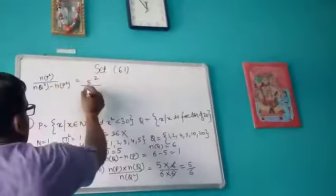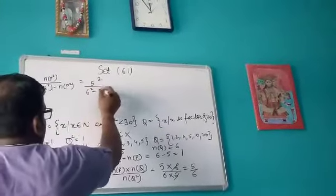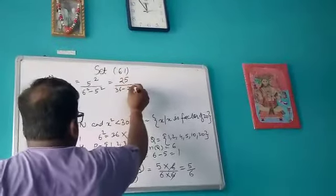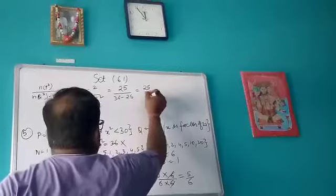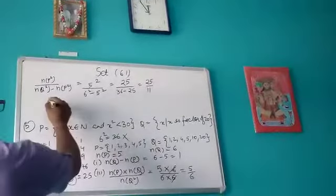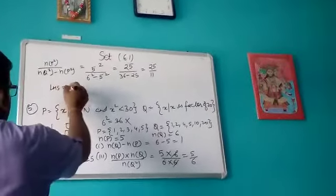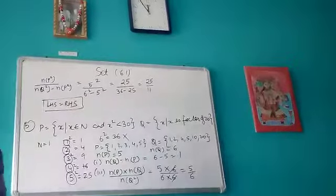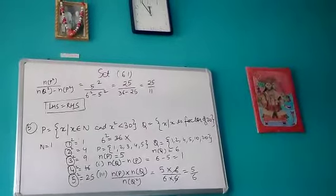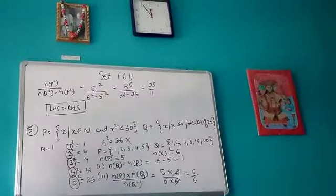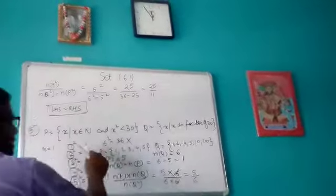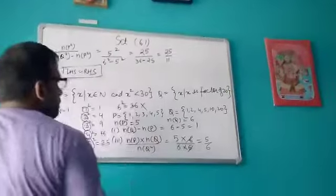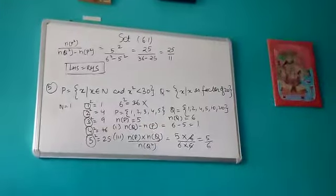Evaluating: 6² − 5² = 36 − 25 = 11, confirming LHS equals RHS. This is how you find the cardinal number of a set — first list out the elements, then count them to get the cardinal number, then solve the required expression.